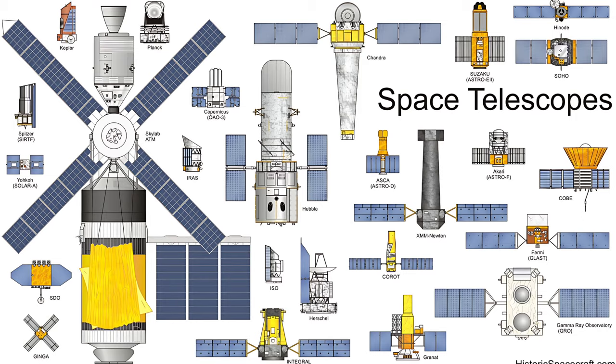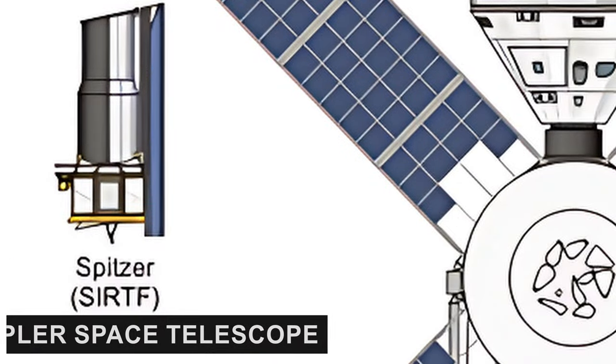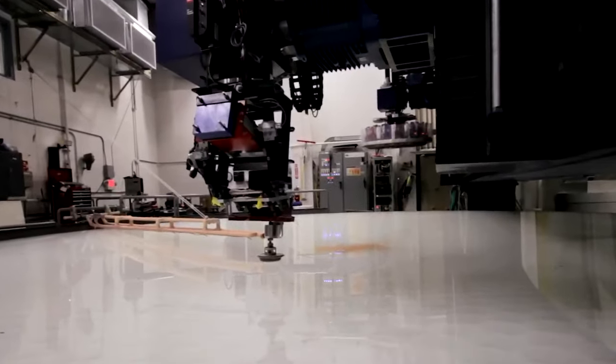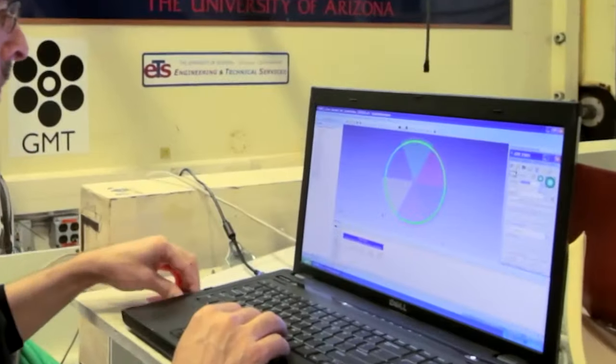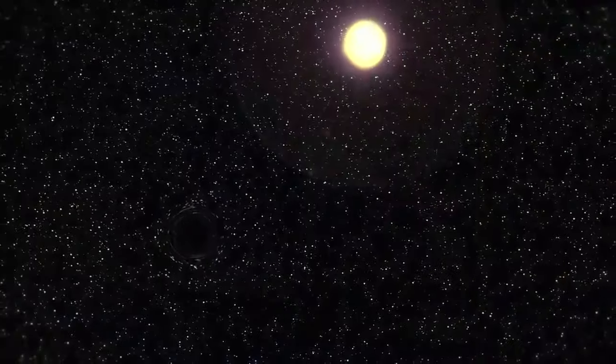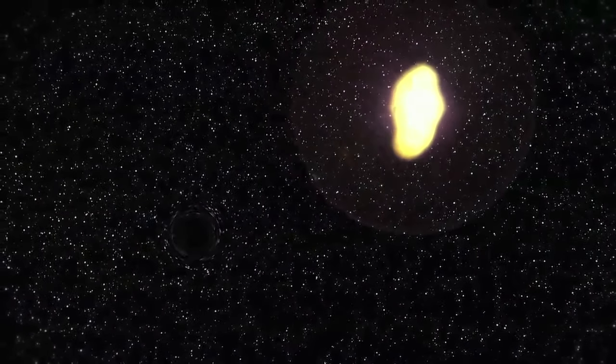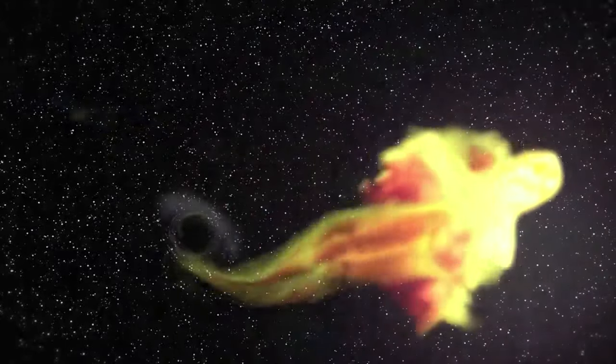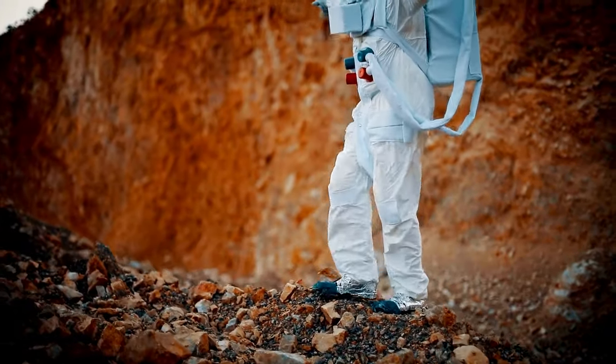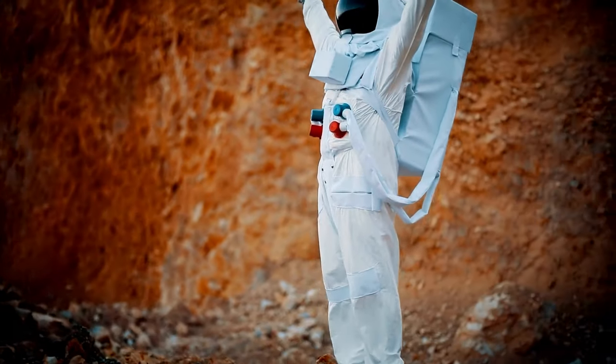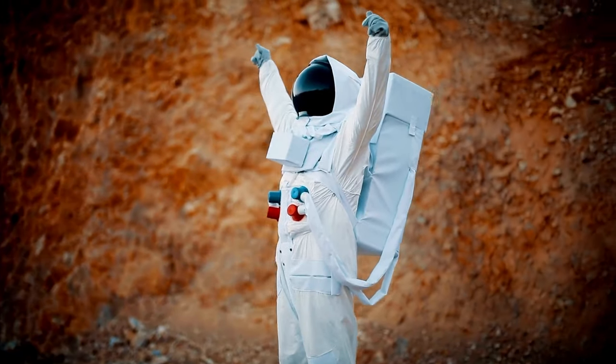One of these telescopes is the Spitzer Space Telescope, equipped with powerful infrared cameras that reveal heat sources in space. This technology allows astronomers to peer into regions where visible light is obscured, unveiling a hidden cosmos. Imagine observing the universe, not with your eyes, but with heat-sensitive instruments, revealing the warmth of celestial objects.